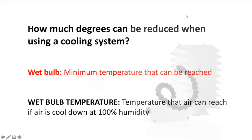In order to calculate the cooling capacity of a system, we first need to learn about the following concepts: dry bulb and wet bulb. Dry bulb is easy — it refers to air temperature. We most of the time track air temperature in a greenhouse, so it's definitely a very easy data point to get.